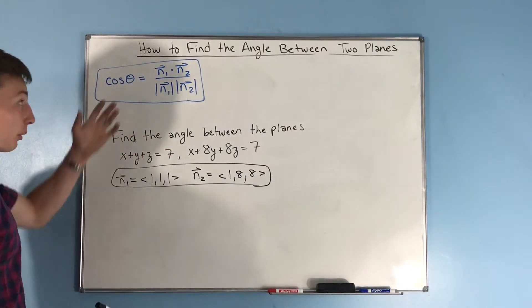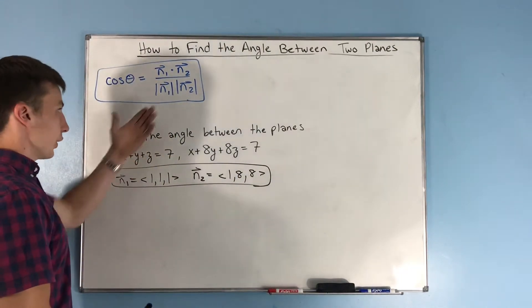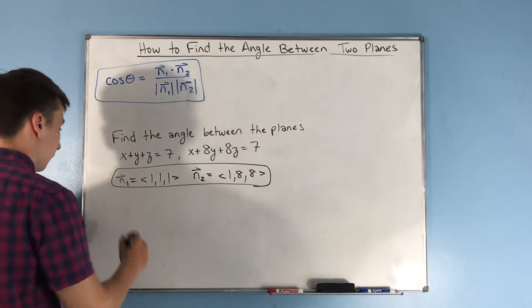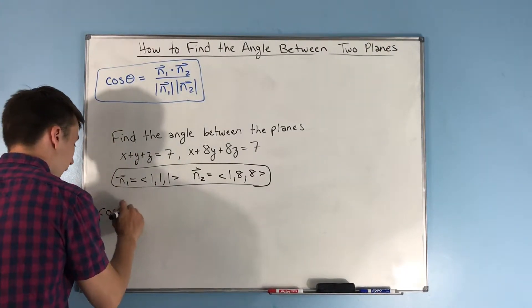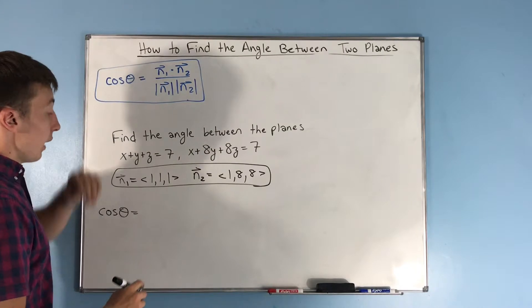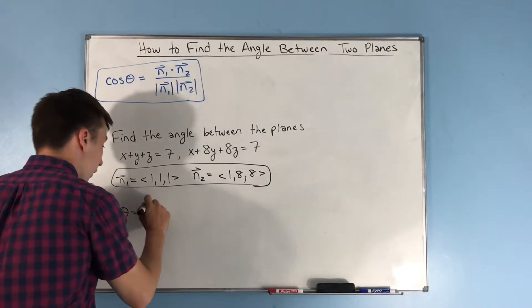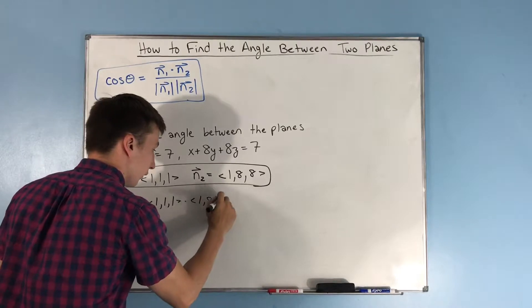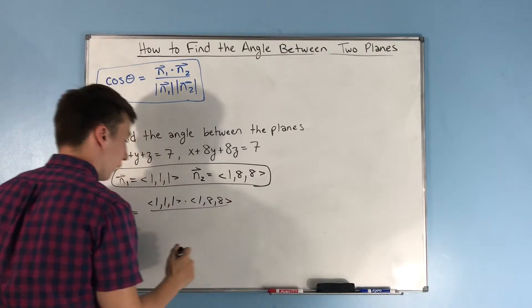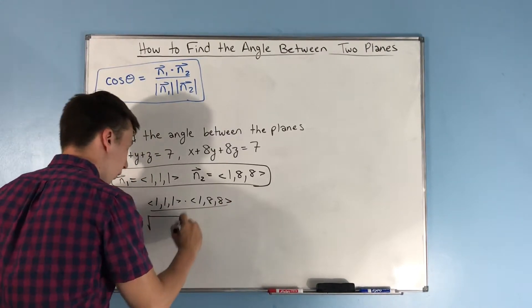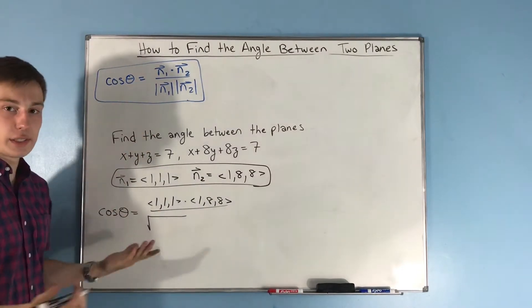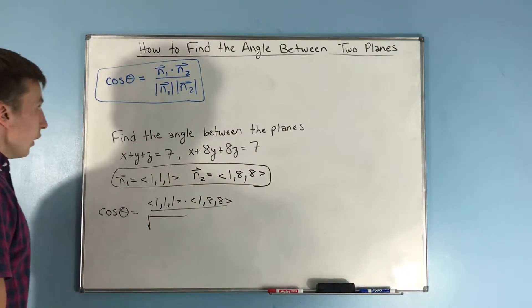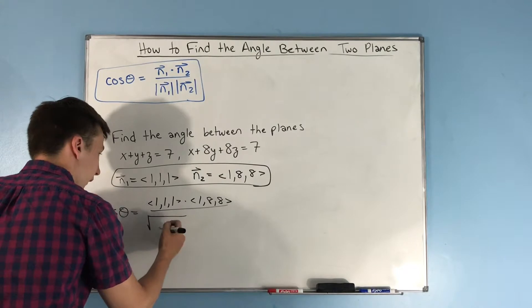And all that's left to do is plug them into this formula. And of course, you're going to have to find the magnitude and the dot product. So we get that cosine theta is equal to n1 dot n2. So we have <1,1,1> dot <1,8,8>. And we're going to put that over,